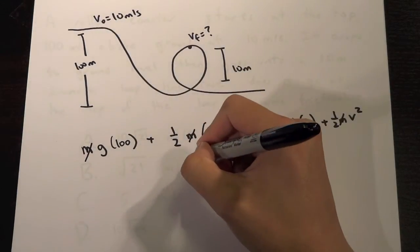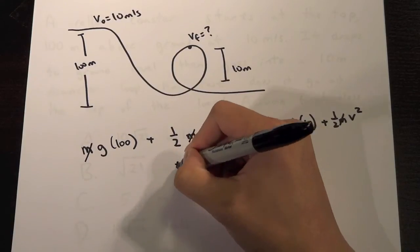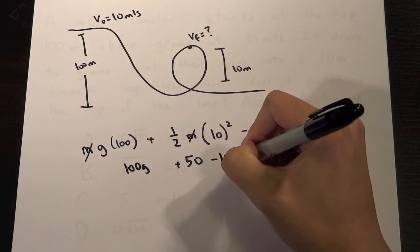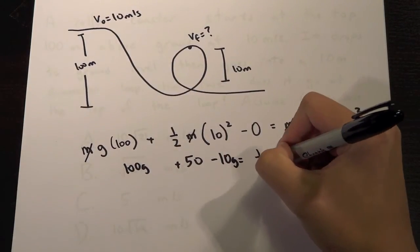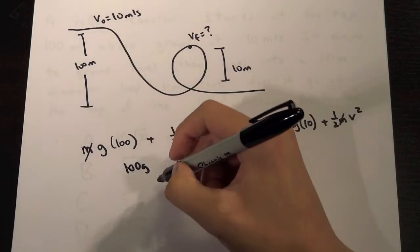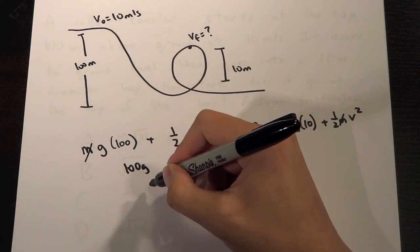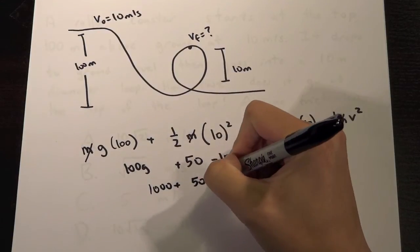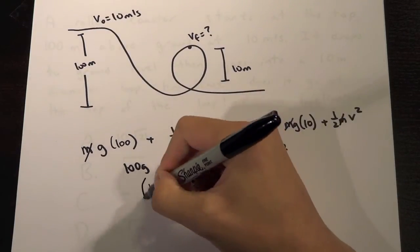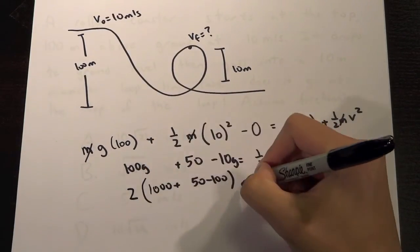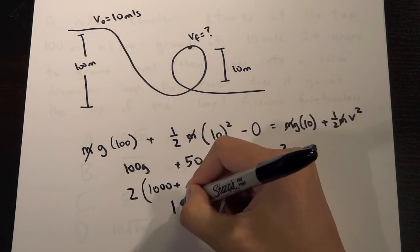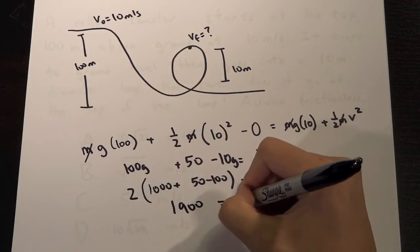So let's just work this out. So this would be 50 plus 100G minus 10G equals 1/2 V squared. So this would be, let's see, 1,000 plus 50 minus 100. And then the whole thing times 2 equals V squared. All right, so now what would that be? That would be 1,900 equals V squared.